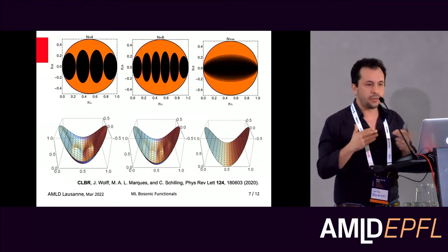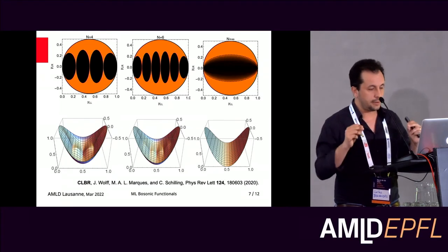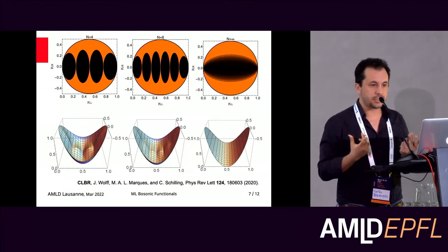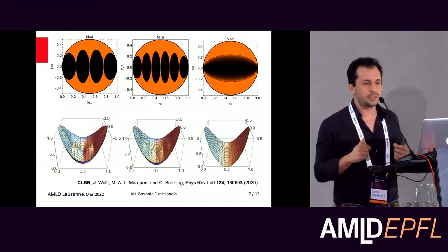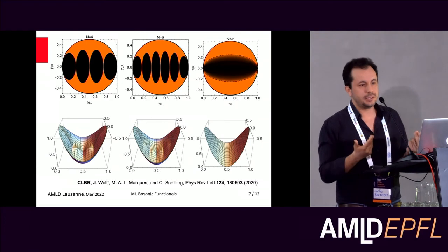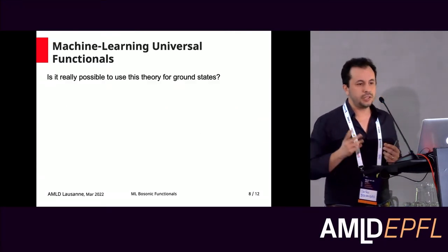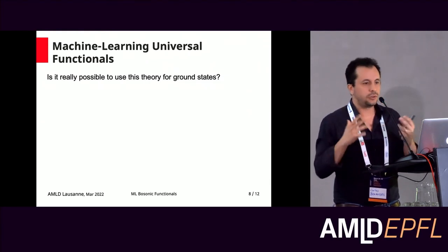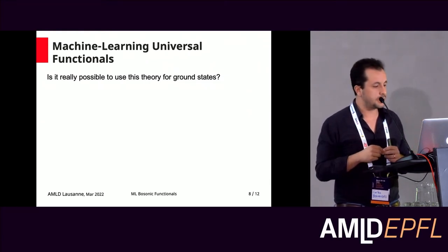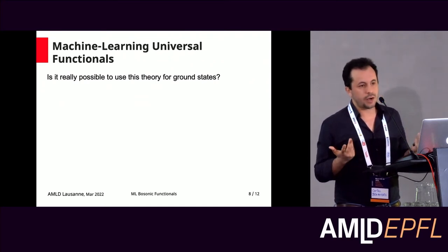To conclude this part: you can describe bosonic ground states using only the one-body density matrix, in the same spirit as density functional theory uses the density, and you avoid the scaling of the Hilbert space. But of course, I was explaining only a two-site system, which is very simple. What about larger systems? For them, we relied on machine learning — work done six months ago with Matteo and Jonathan.